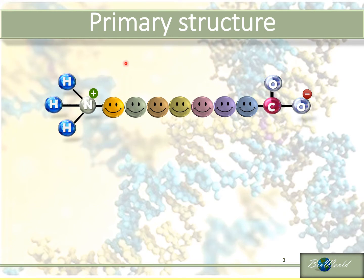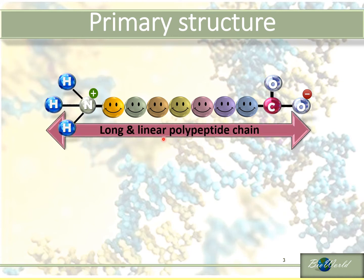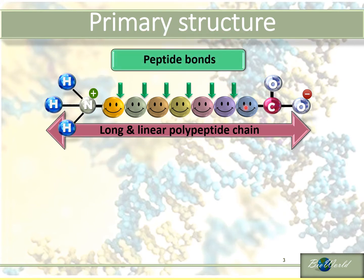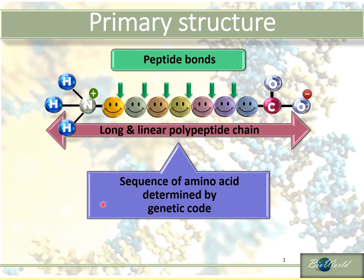The first level of organisation is the primary structure. All proteins must start as a primary structure. It is a long and linear polypeptide chain where the amino acids are held together by peptide bonds. Each amino acid has a different colour indicating that they are different, since there are altogether 20 different amino acids to choose from. The arrangement of these amino acids depends on the genetic code in the nucleus of the cell.